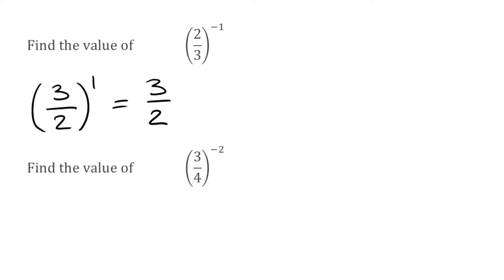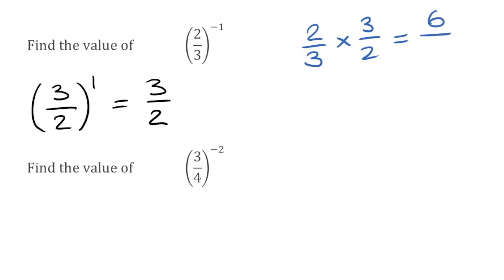A number multiplied by its reciprocal will always be 1. We were finding the reciprocal of 2 thirds and got 3 over 2. Multiplying 2 thirds by 3 over 2: the numerator is 2 times 3 which is 6, and the denominator is 3 times 2 which is also 6. So 6 over 6 equals 1, confirming we found the correct reciprocal.